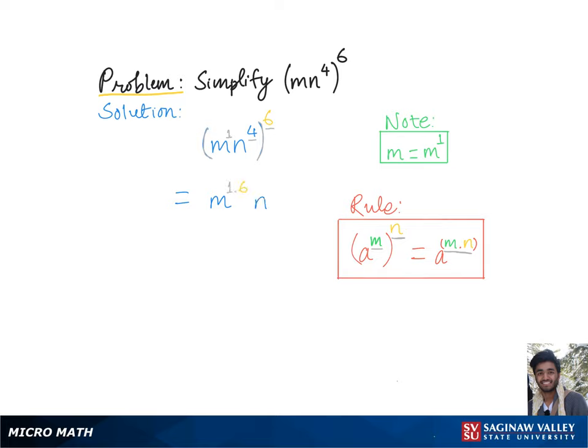Again, we keep the base n and multiply the exponents, which is 4 times 6, which gives us the final answer m raised to the sixth power times n raised to the 24th power.